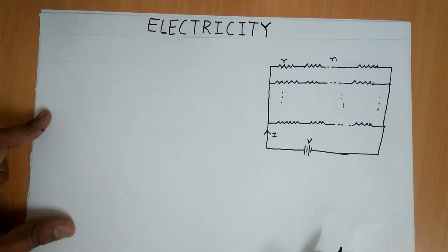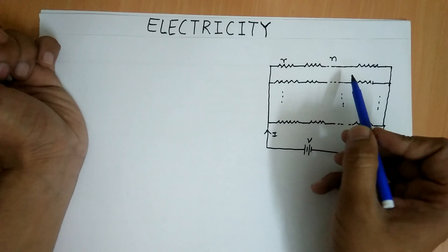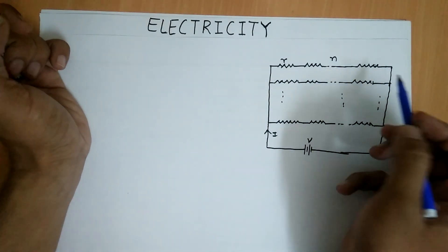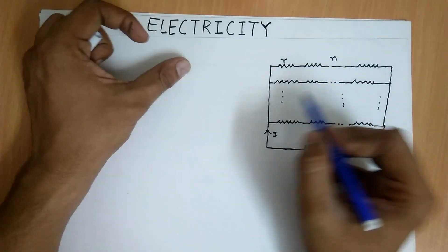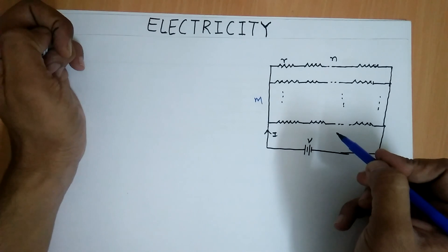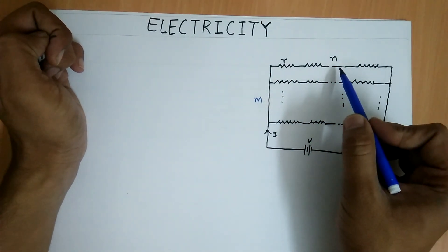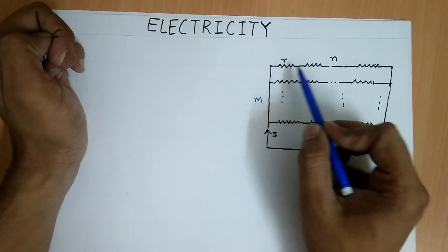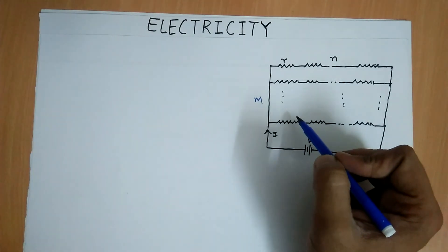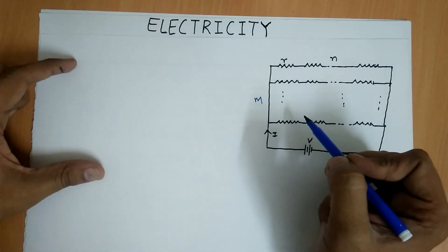In this case, what we have is n number of resistances with resistance R connected in series, and those series are connected in parallel — m series are connected in parallel with each other. There are n number of resistances with resistance R connected in series, and m such series are connected in parallel. Now we have to find the net resistance.